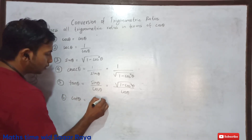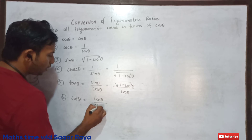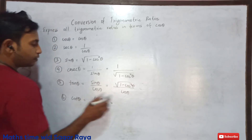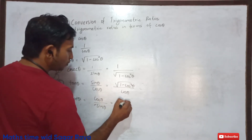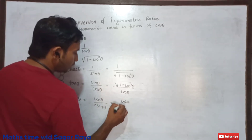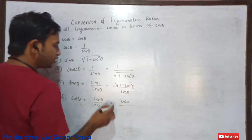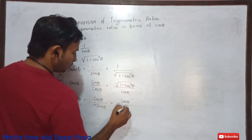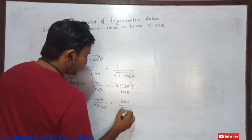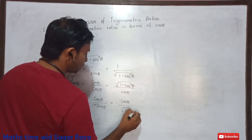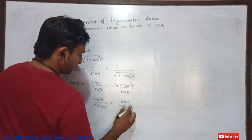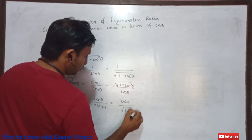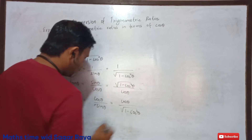And cot theta equals cos theta by sin theta. Instead of cos theta we write it as it is, and instead of sin theta we write root under 1 minus cos squared theta. So cot theta equals cos theta over root under 1 minus cos squared theta.